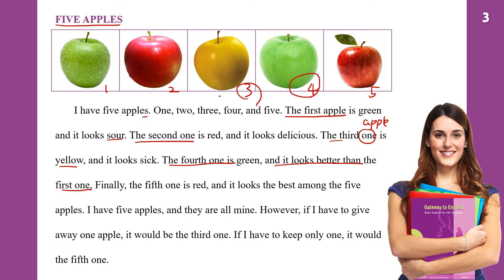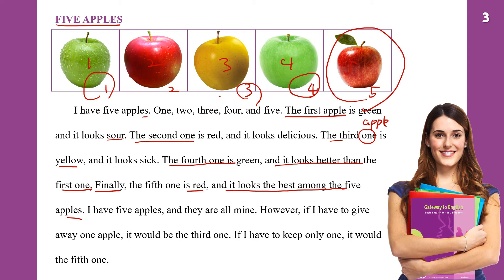This fourth one looks better than the first one. Finally, the fifth one is red, and the fifth one looks the best. I have five apples and they are all mine. However, if I have to give away one apple, it would be the third one. If I have to keep only one, it would be the fifth one.